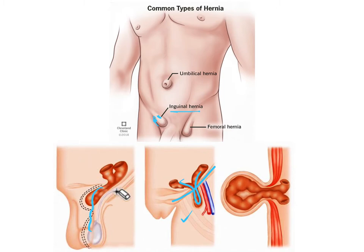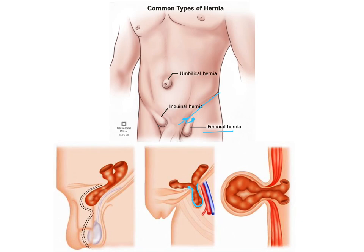Here is an example showing inguinal hernia, which can extend to the scrotum, and femoral hernia below the inguinal ligament. The neck of the femoral hernia sac is below and lateral to the pubic tubercle. This is a clinical example of femoral hernia with a loop of intestine lodged in the femoral canal.